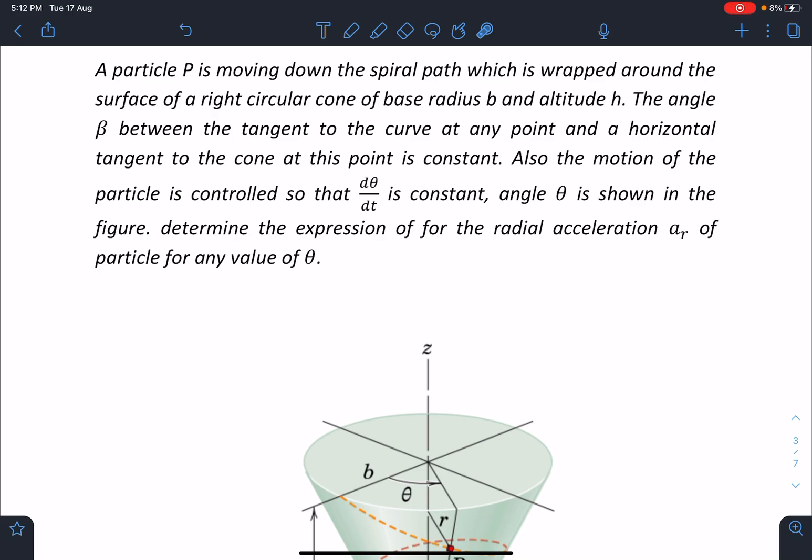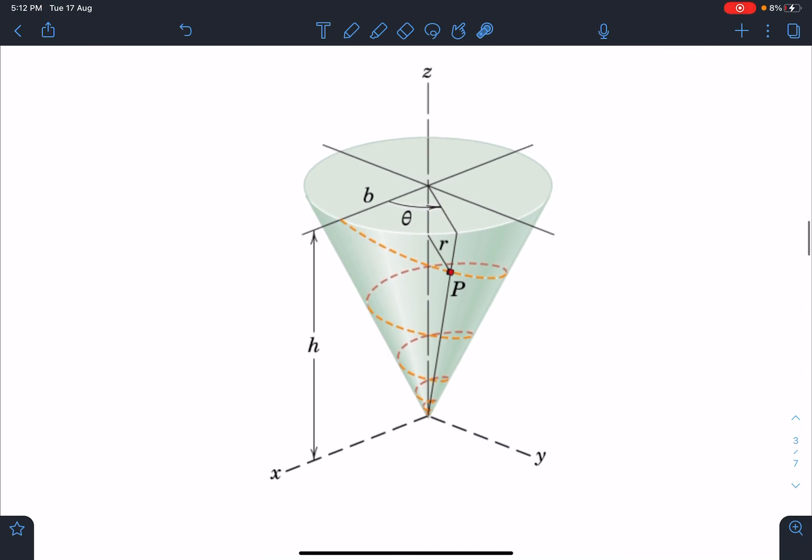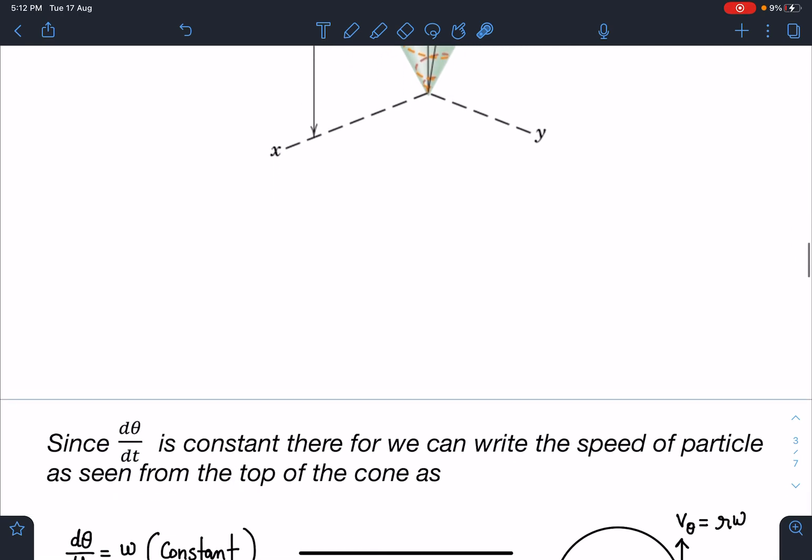Also, the motion of the particle is controlled so that dθ/dt is constant. Angle θ is shown in the figure. Determine the expression for the radial acceleration aᵣ of the particle for any value of θ. Here is the diagram - you can see this particle is moving inside this cone in a spiral.